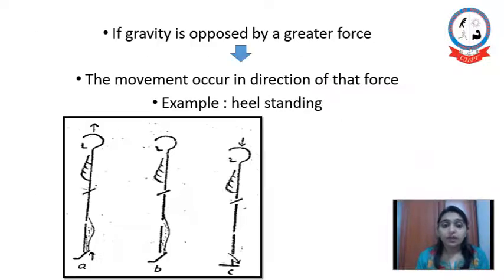But if this gravity force is opposed by any greater force, then the movement will occur in the direction of that force. For example, in heel standing. Here we can see in a figure which figure A suggests that a person from standing have shifted him in a heel standing position with the help of contraction of calf muscle. Here calf muscles are contracting to get a force which is opposite and greater than that of the gravity.